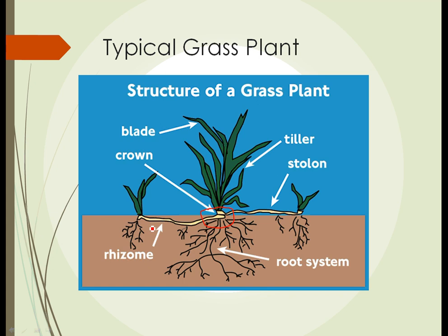The grass grows from a point below where it's being cut and it keeps sending up new shoots. From the crown of the grass plant, it sends up something called a tiller, which is like a stem to which the individual leaves or blades of grass are attached. If the grass plant is mowed or cut, the crown has the ability to send up ever more tillers and leaves.